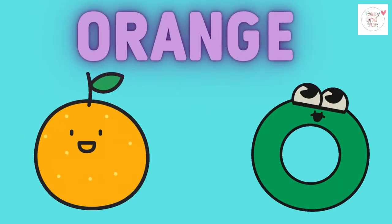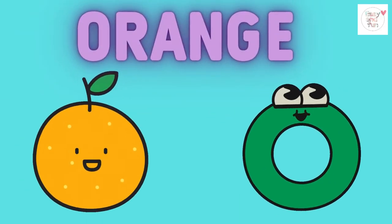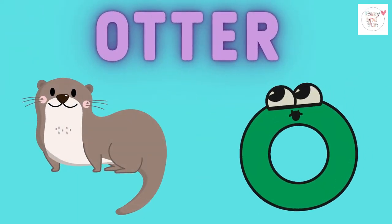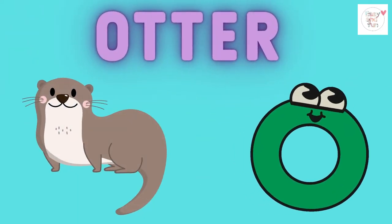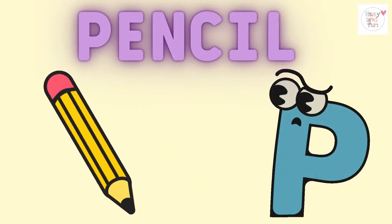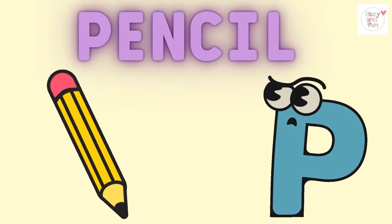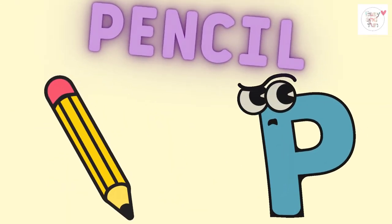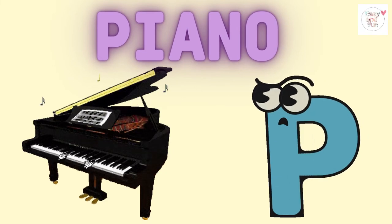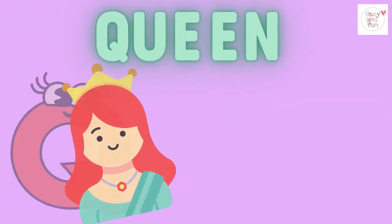O is for orange, o-o-orange. O is for otter, o-o-otter. P is for pencil, p-p-pencil. P is for piano, p-p-piano.